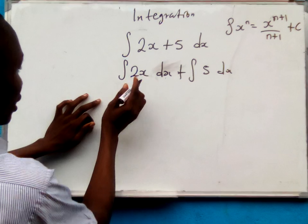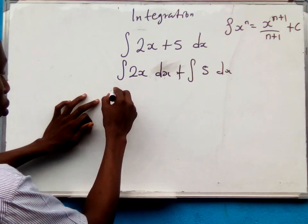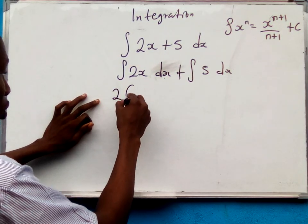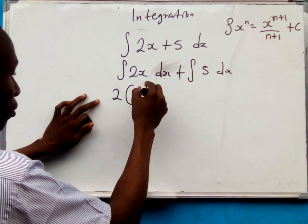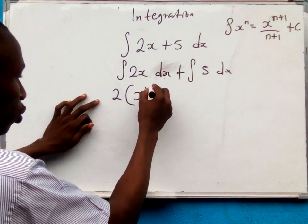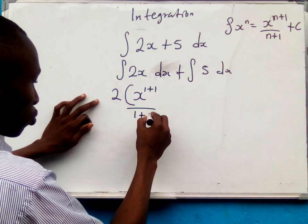Now from here, if I integrate this, let me isolate the coefficient which is 2. So this is 2 into x. The power of this x is 1. So we have 1 plus 1, all over 1 plus 1.